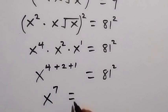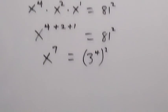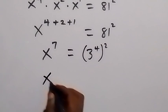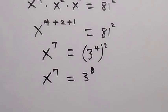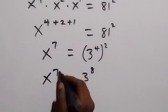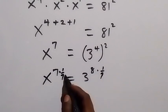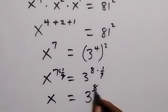From here we can express 81 as 3 raised to the power 4, then squared. From the law of indices, the powers multiply, and this becomes x raised to the power 7 equals 3 raised to the power 8. Since we are finding the value of x, we remove the power of 7 by multiplying both powers by 1 over 7 — the 7s cancel — leaving x equals 3 raised to the power 8 over 7.